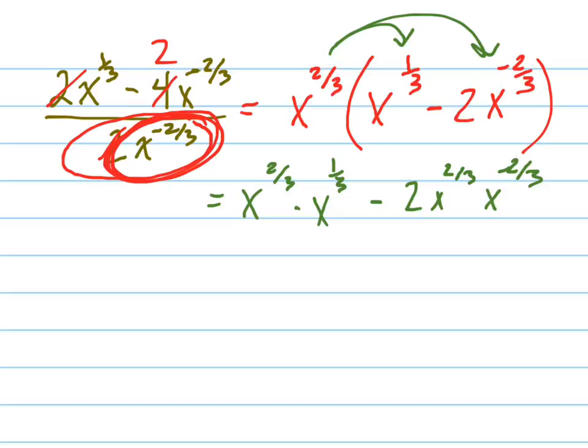And remember the rule. So I'm thinking in my head, what are the rules when I've got like x squared times x to the 3rd? What do I do with the exponents? You add them. I add them together. So that's x to the 5th. So what do I do with these two exponents right here?